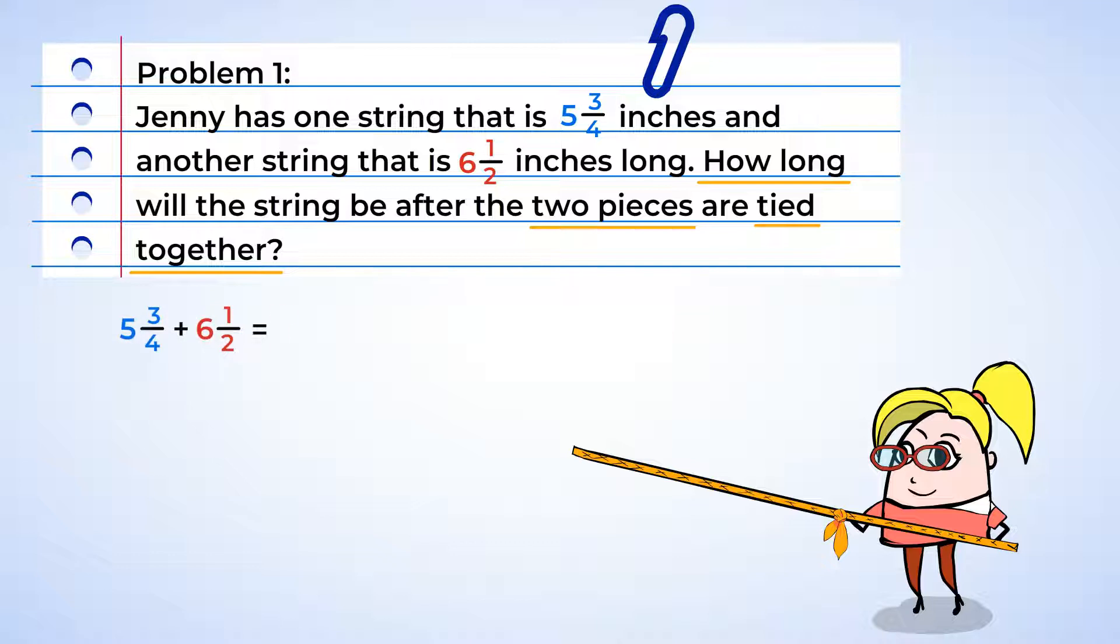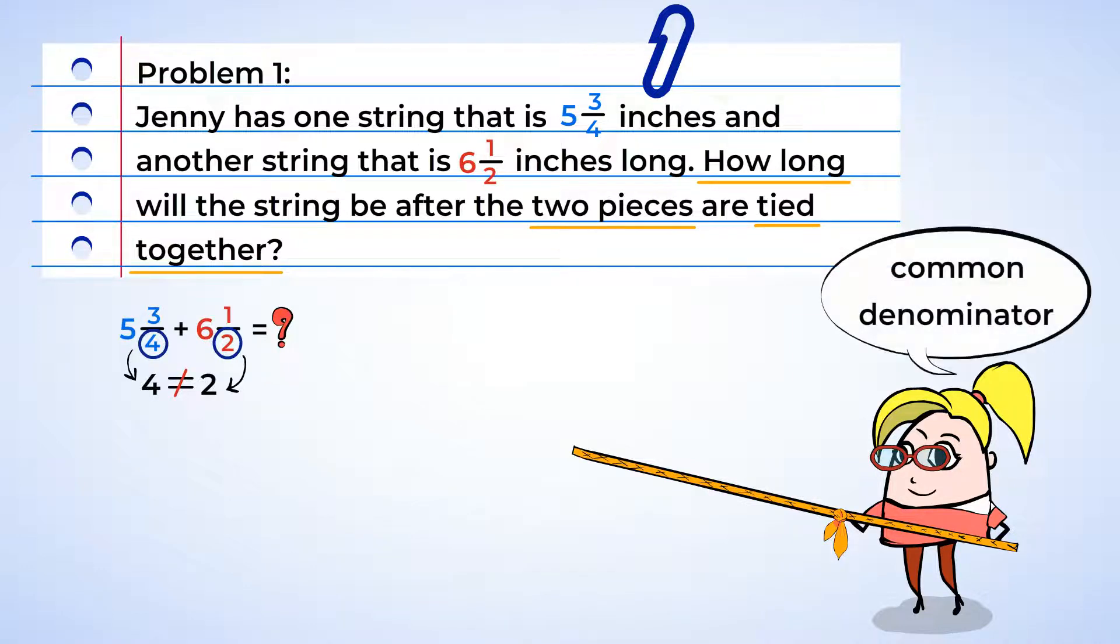Alright, so we're going to need to add these two fractions together. But hang on, the denominators are not the same. So we need to convert unlike fractions into like fractions. And to do that, we have to find a common denominator. We have 4 and 2, and their common denominator is 4.